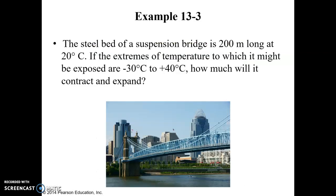Let's take a look at an example problem here. If we have a suspension bridge that is 200 meters long at 20 degrees Celsius, 20 degrees Celsius roughly corresponds to 70 degrees Fahrenheit, so that's about room temperature. But let's say it's a bridge and it's outdoors and subject to weather conditions. It may experience extreme temperatures as low as negative 30 degrees Celsius or up to positive 40 degrees Celsius. How much is it going to expand and contract with these changing temperatures?